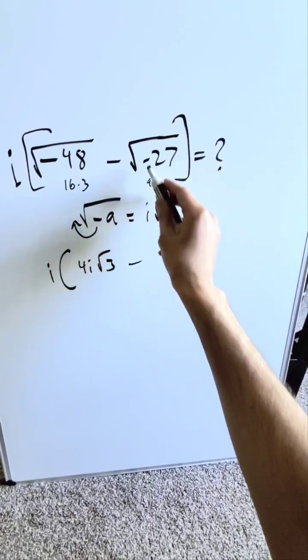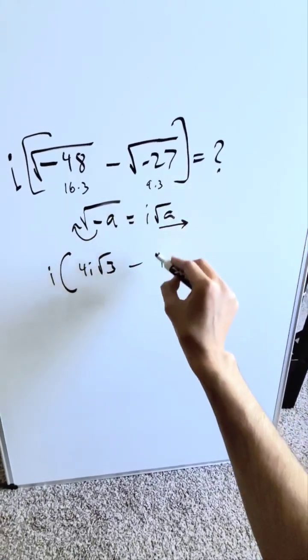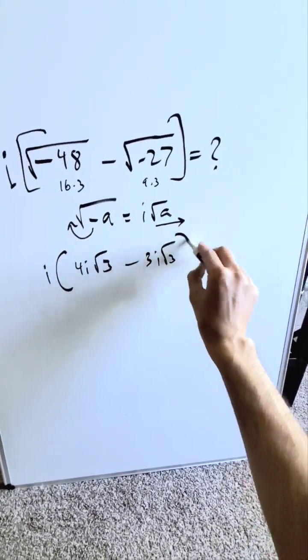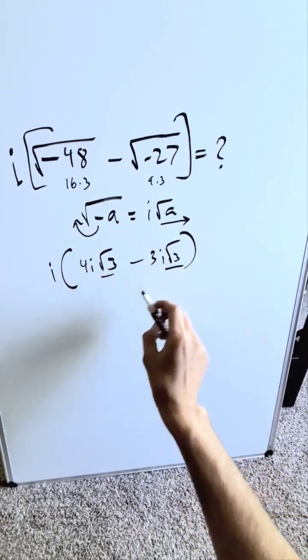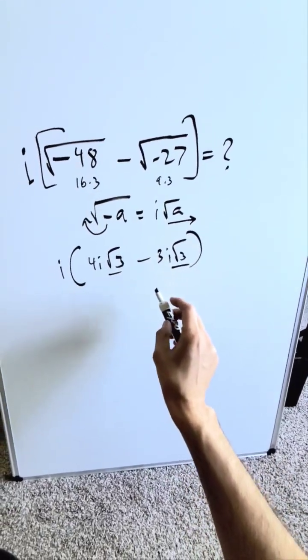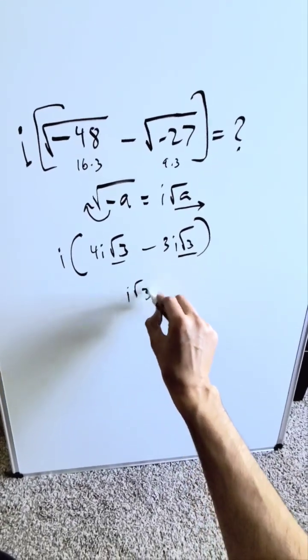27 is 9 times 3. We have a minus, square root of 9 is 3, and then I have root 3. You're looking here at common root bases. 4i root 3 minus 3i root 3 is i root 3.